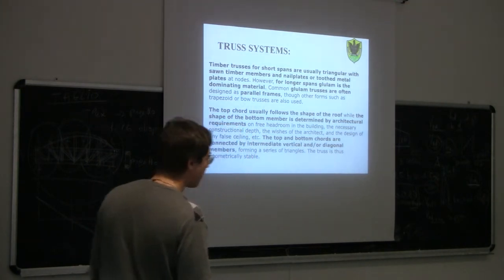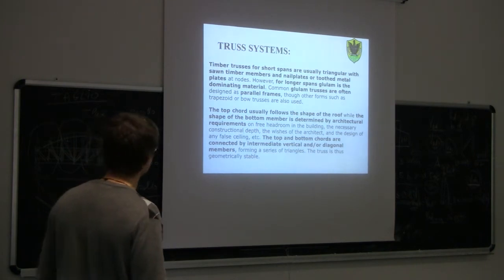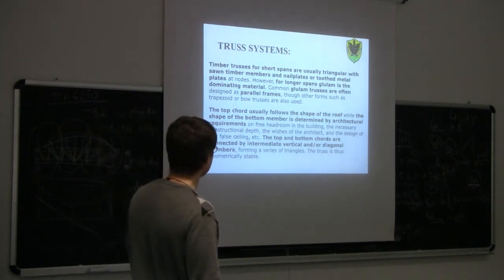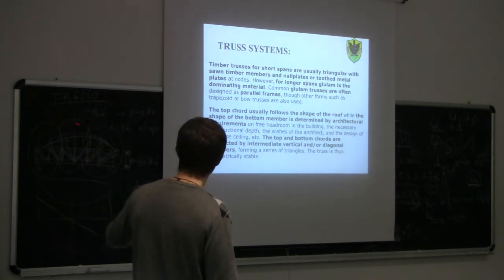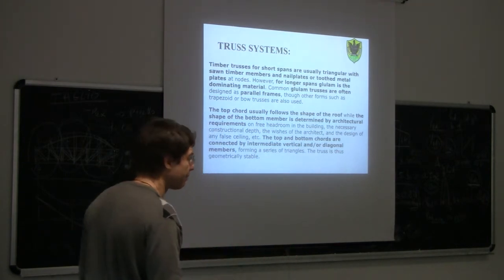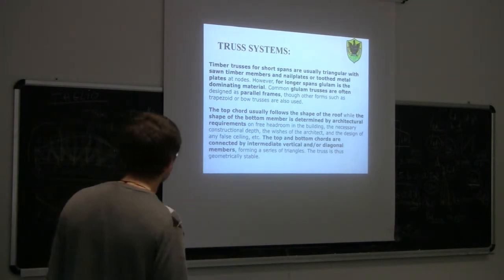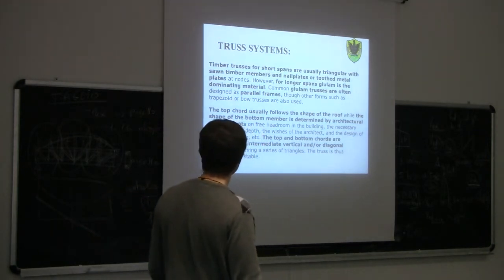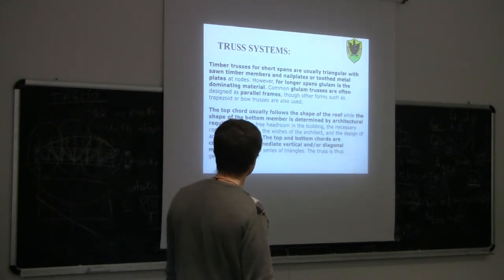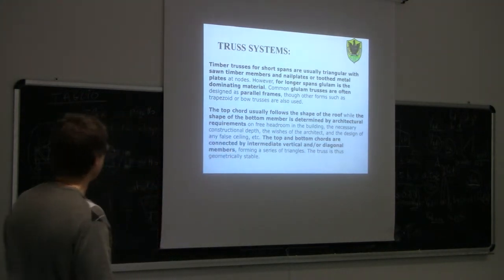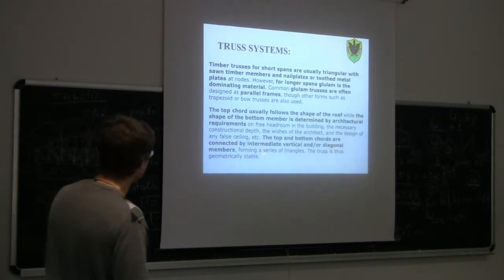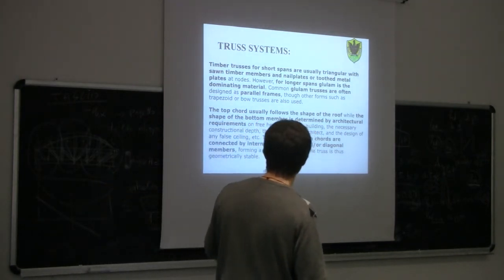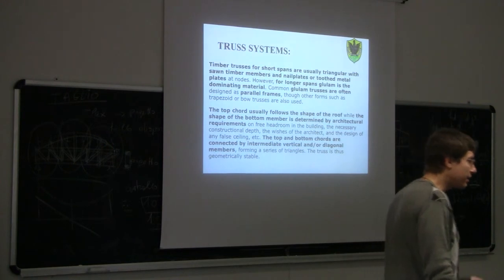The top cord usually follows the shape of the roof — for example, if you have a pitched roof the top cord will follow that shape, otherwise we have a curved shape and so on. The shape of the bottom chord is determined by architectural requirements. The top and bottom cords are connected by the middle vertical and diagonal members, forming a series of triangles.